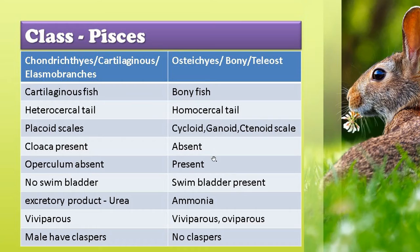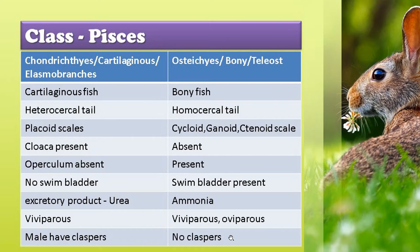Cartilaginous fishes do not have a swim bladder, whereas bony fishes have a swim bladder. The excretory product is urea in cartilaginous fishes, whereas it is ammonia in bony fishes. Cartilaginous fishes are viviparous, or either viviparous or oviparous. Males of cartilaginous fishes have claspers as organs for reproduction, whereas bony fishes do not possess claspers. Examples of Chondrichthyes: Scoliodon (shark), Trygon (stingray), Pristis (sawfish). Examples of Osteichthyes (bony fishes):